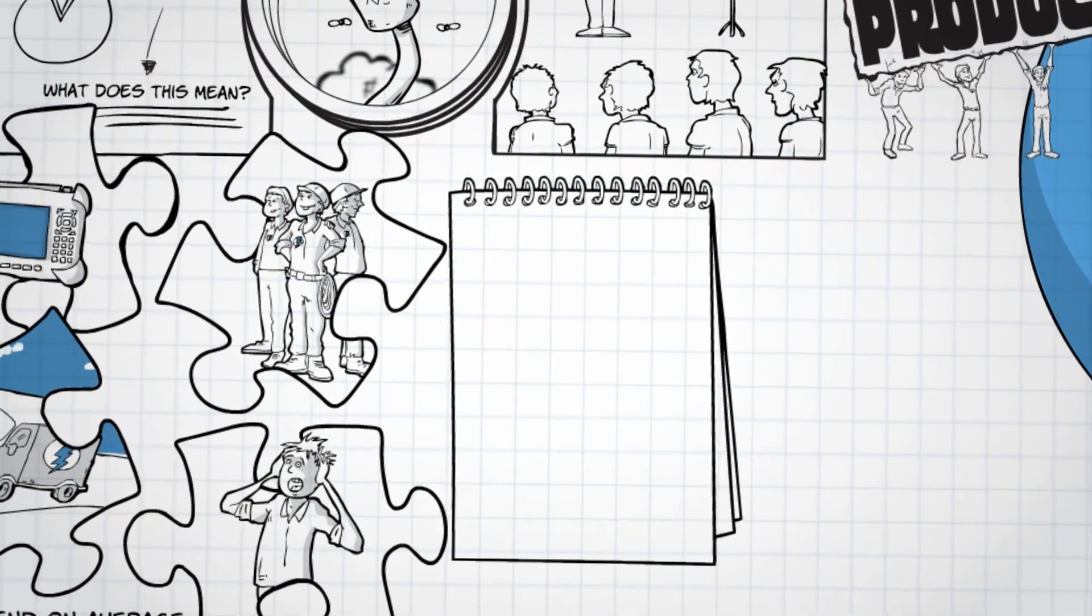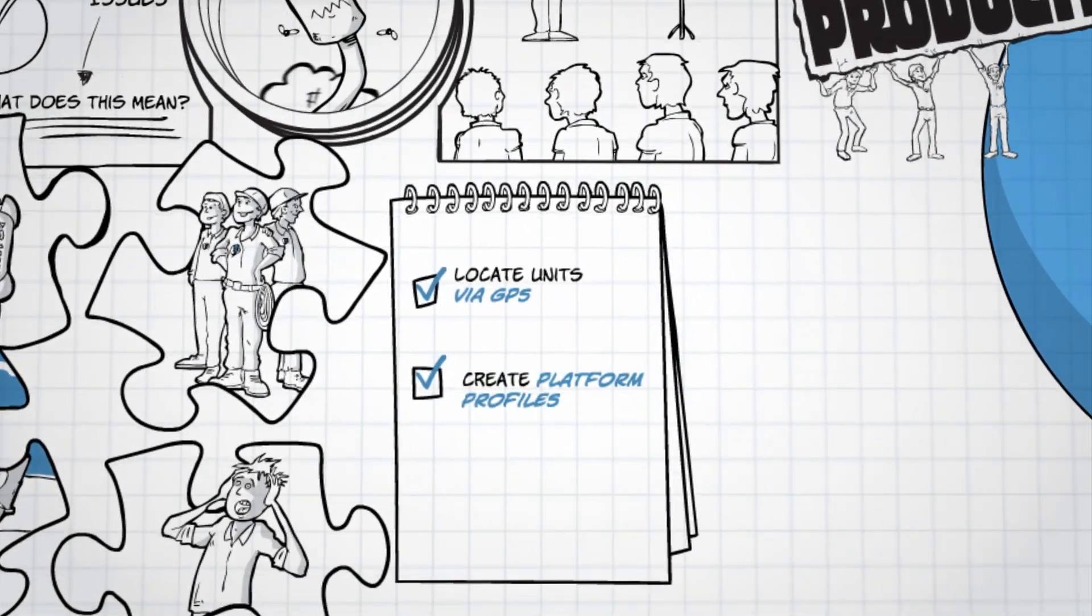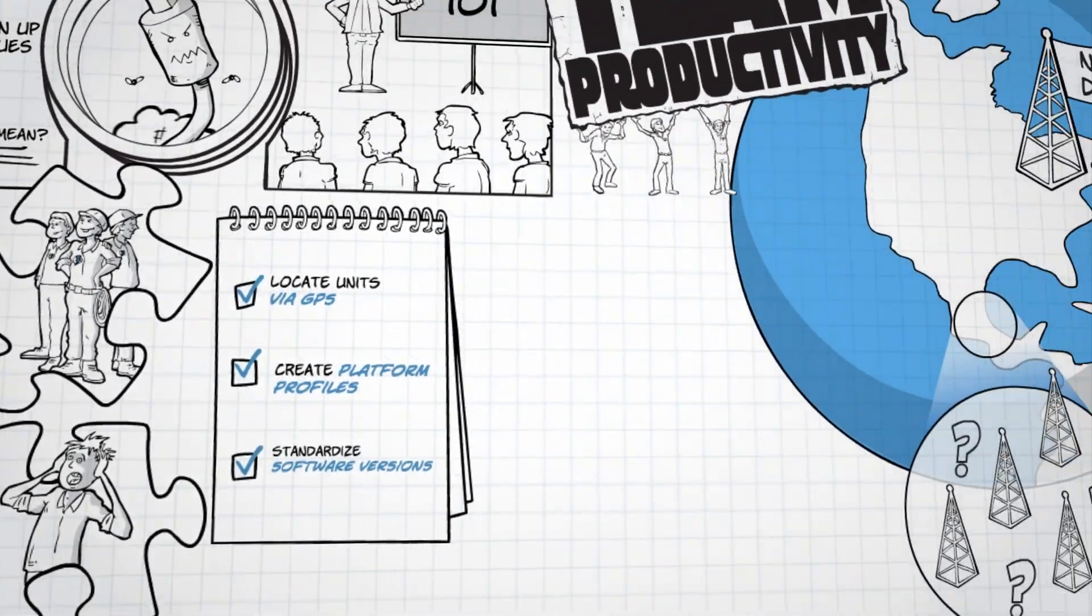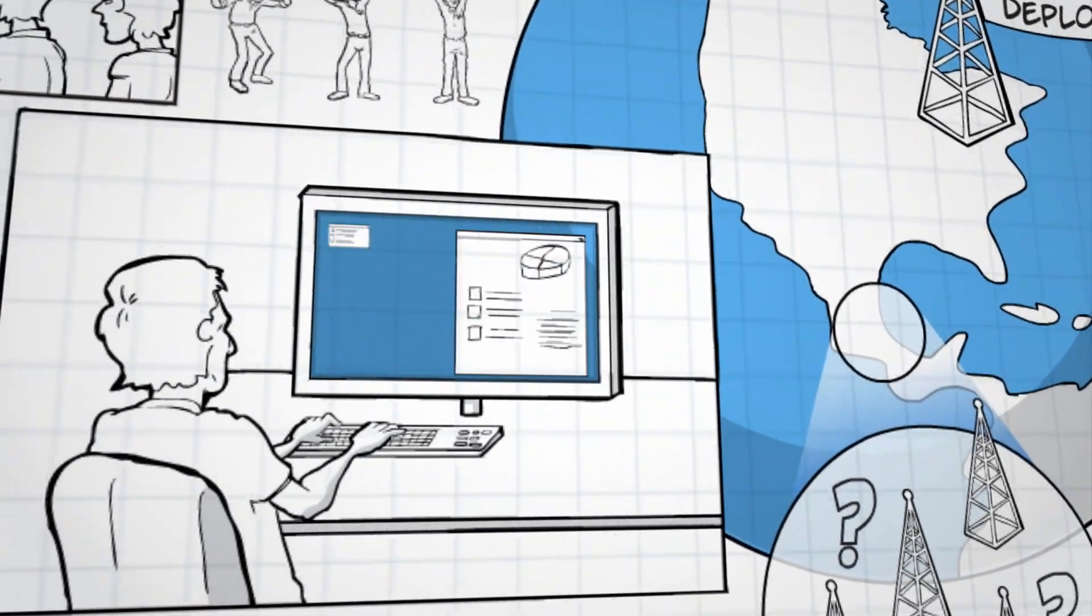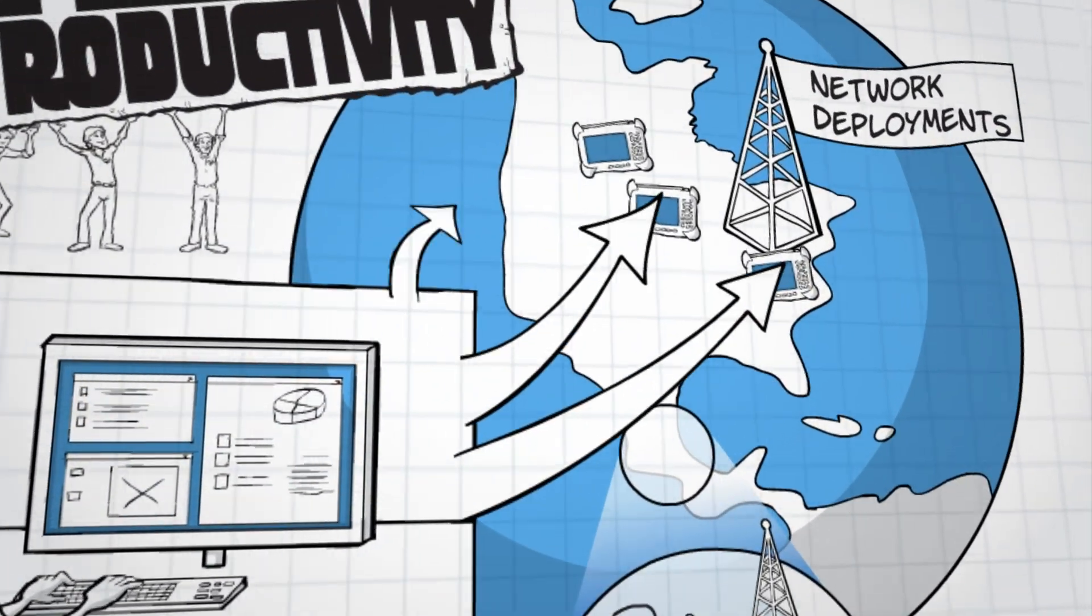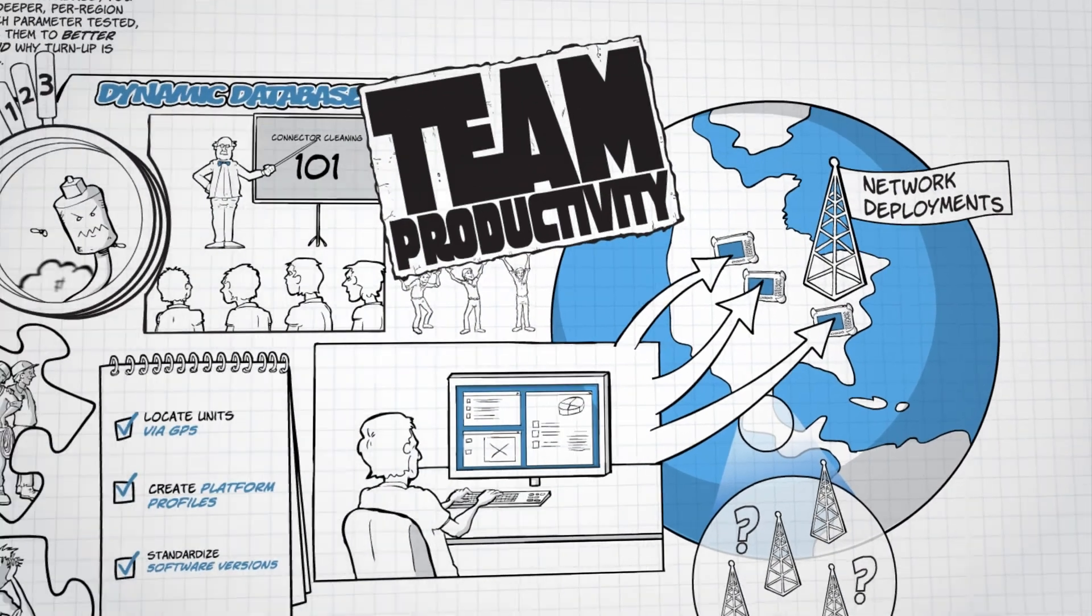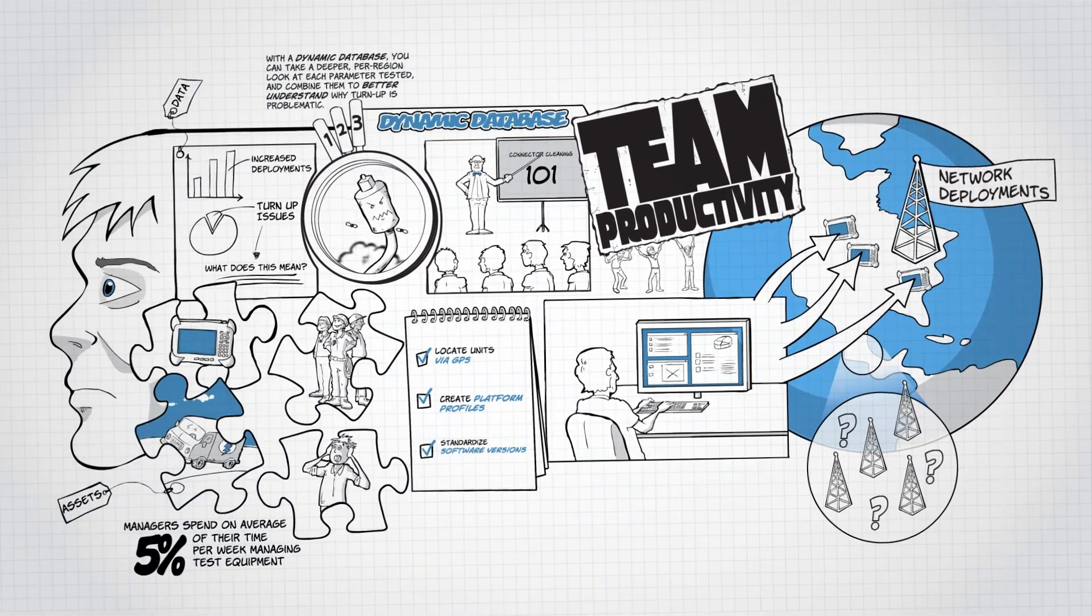EXFO Connect automates this whole process. You create platform profiles, you select the software versions, and the software is pushed to the field units as they connect. And there you have it. All units get upgraded to the same software baseline.